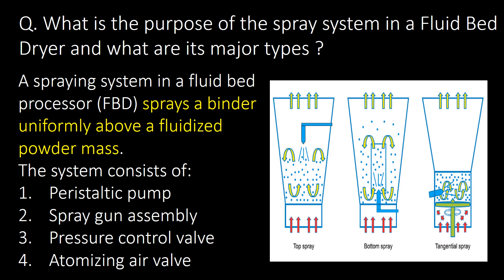What is the purpose of the spray system in a fluid bed dryer and what are its major types? A spraying system in a fluid bed processor or FBD sprays a binder uniformly above a fluidized powder mass. This system consists of a peristaltic pump, spray gun assembly, pressure control valve, and atomizing air valve. The major types are top spray, bottom spray, and tangential spray.